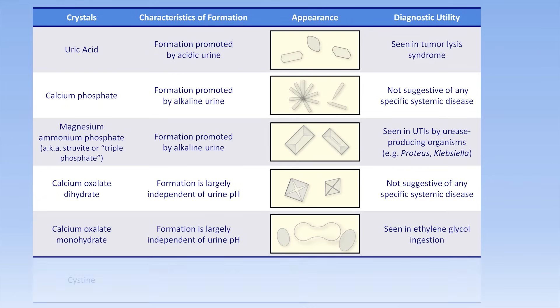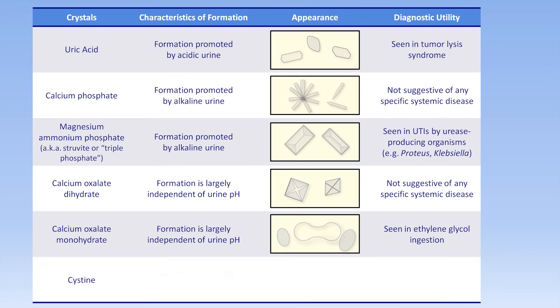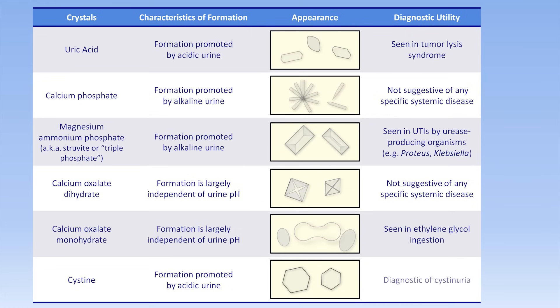Last, cystine crystals, which form in acidic urine, look like flat hexagonal plates and are diagnostic of cystinuria — a genetic defect in renal cystine transport.